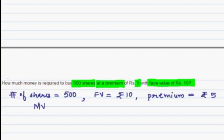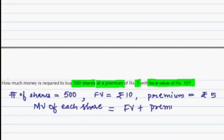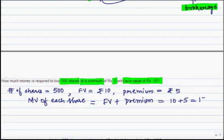When we say the share is at a premium, its market value is greater than face value. How much greater? It is given that the premium is Rs 5 greater than the face value. So market value is equal to face value plus the premium, which is equal to 10 plus 5, which is equal to Rs 15. So 15 is the market value of this share.